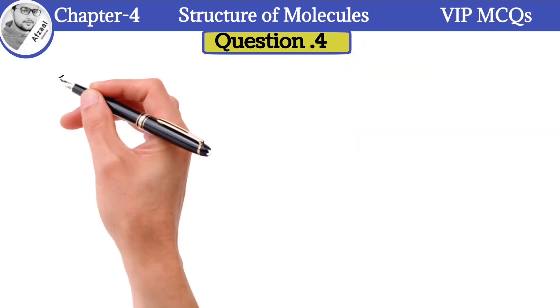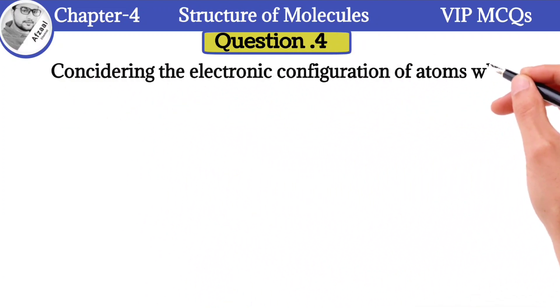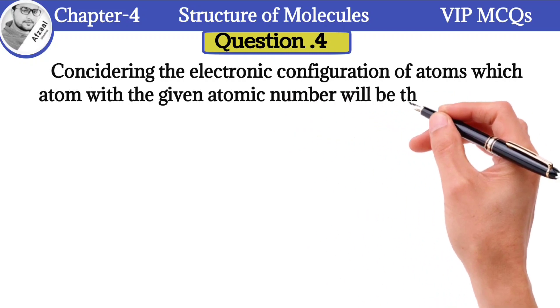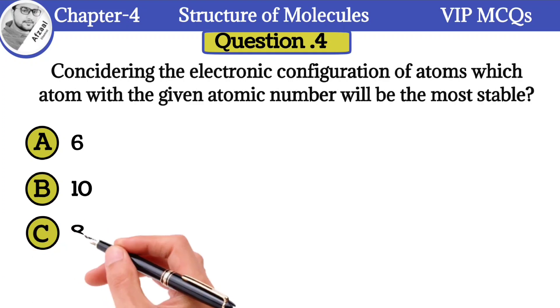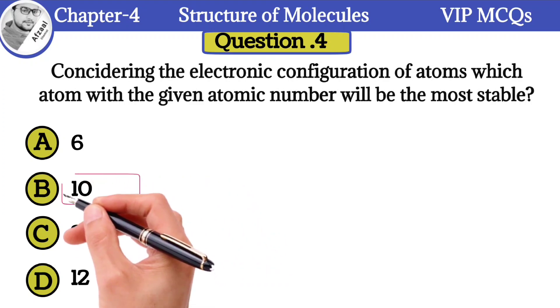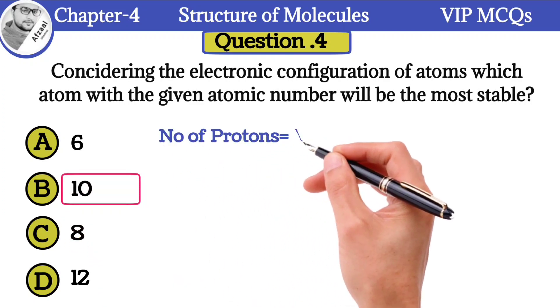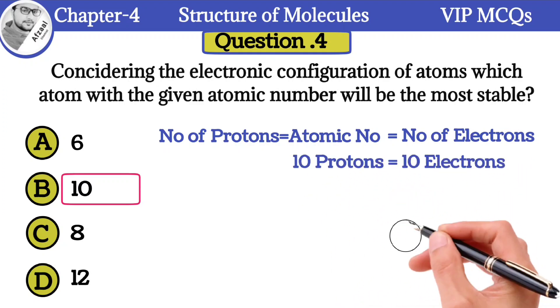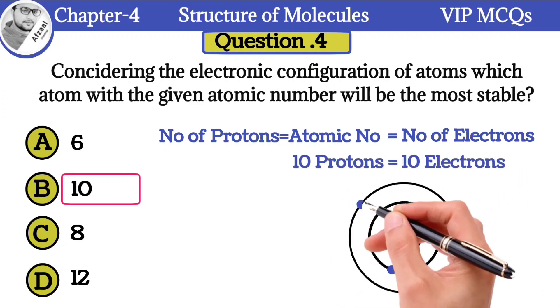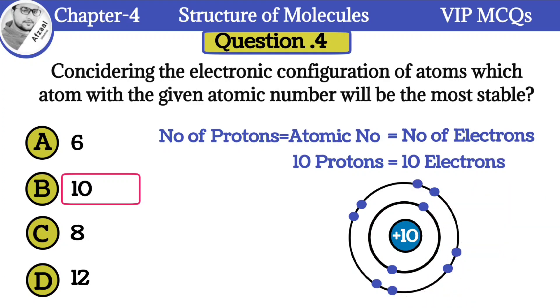Question number 4: Considering the electronic configuration of atoms, which atom with the given atomic number will be the most stable: A) 6, B) 10, C) 8, D) 12. The correct option is 10. My dear students, the total number of protons is known as atomic number. For a neutral atom, the number of protons are equal to the number of electrons. So the atom with atomic number 10 has 10 electrons: 2 in the first shell and 8 electrons in the valence shell. According to the octet rule, atoms with 8 electrons in the valence shell become stable.